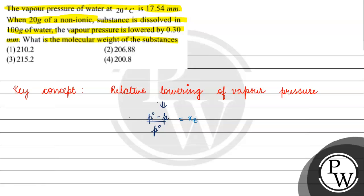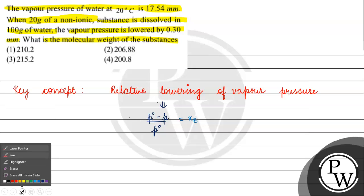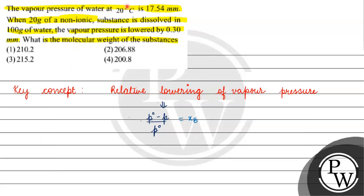P0 is the vapor pressure of the pure solvent. In this question, the vapor pressure of water at 20 degree Celsius is 17.54 mm, and when we add 20 grams of non-ionic substance, the vapor pressure is lowered by 0.30 mm. So the lowering of vapor pressure is 0.30 mm, and P0 is 17.54 mm.